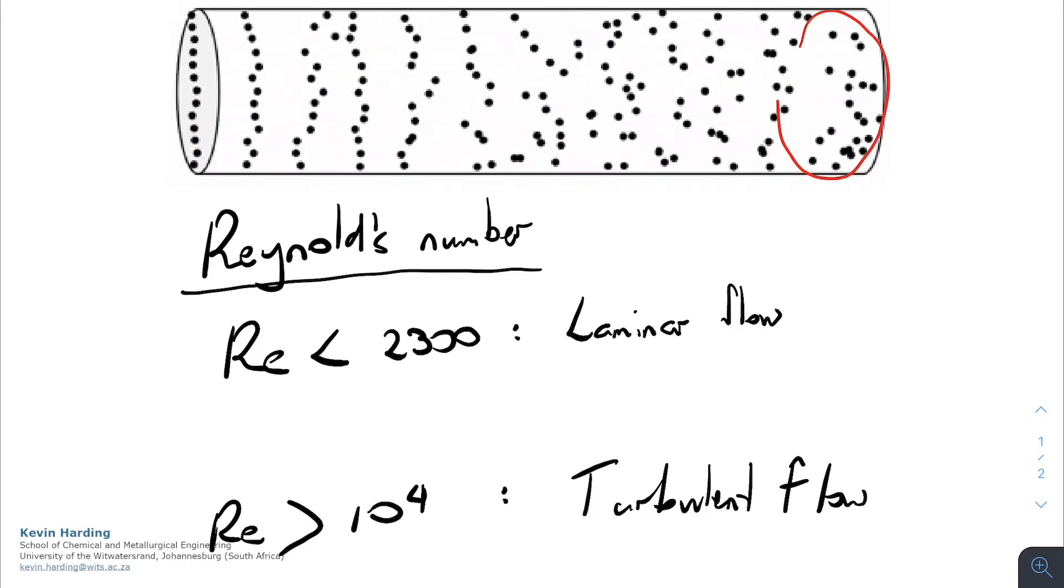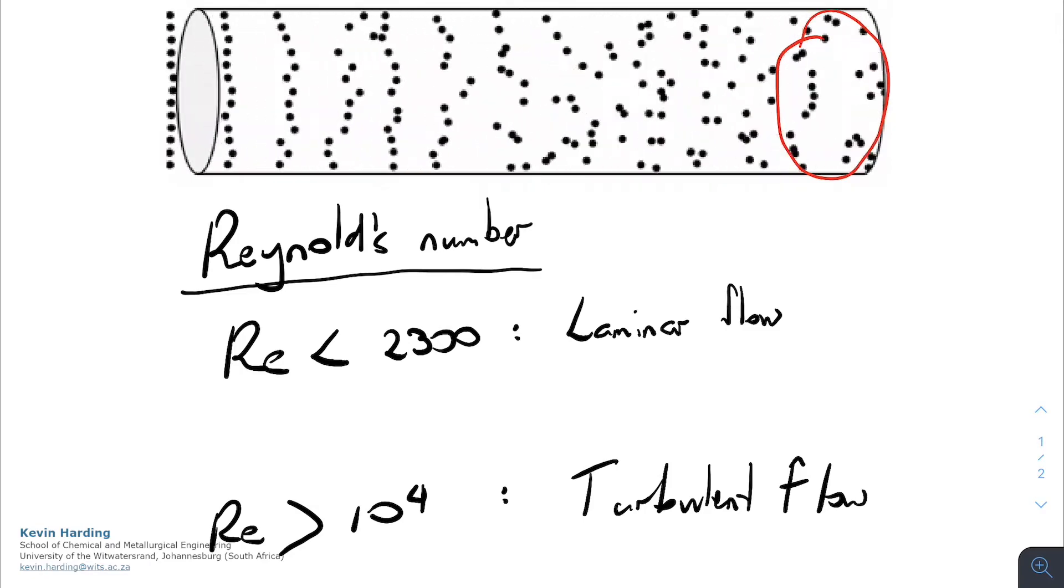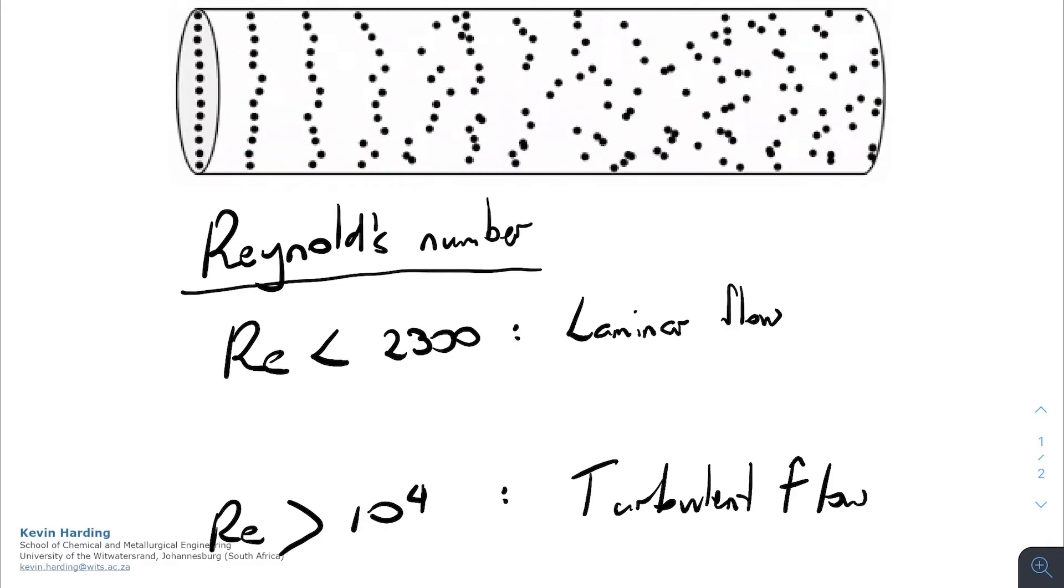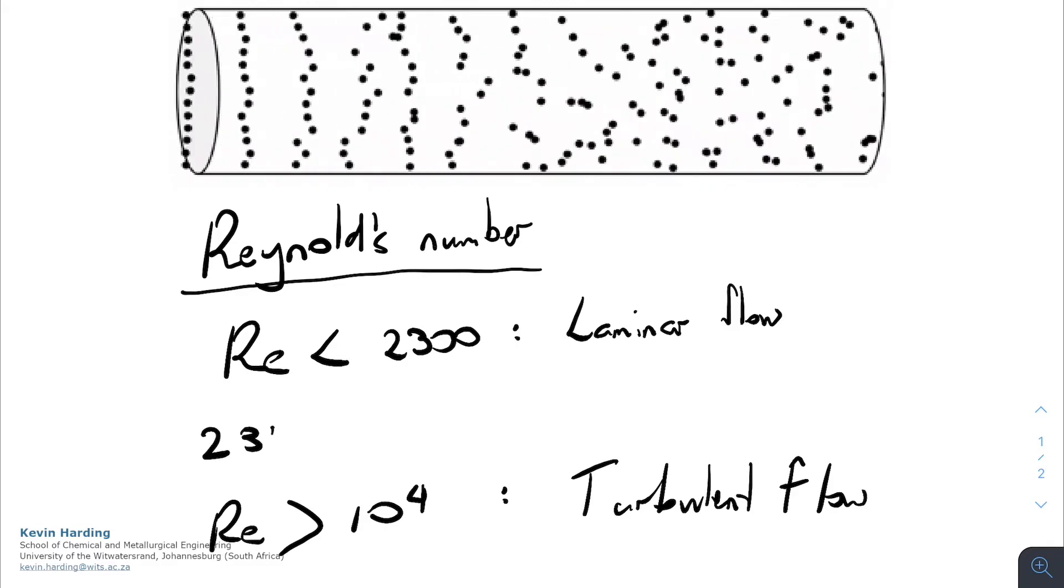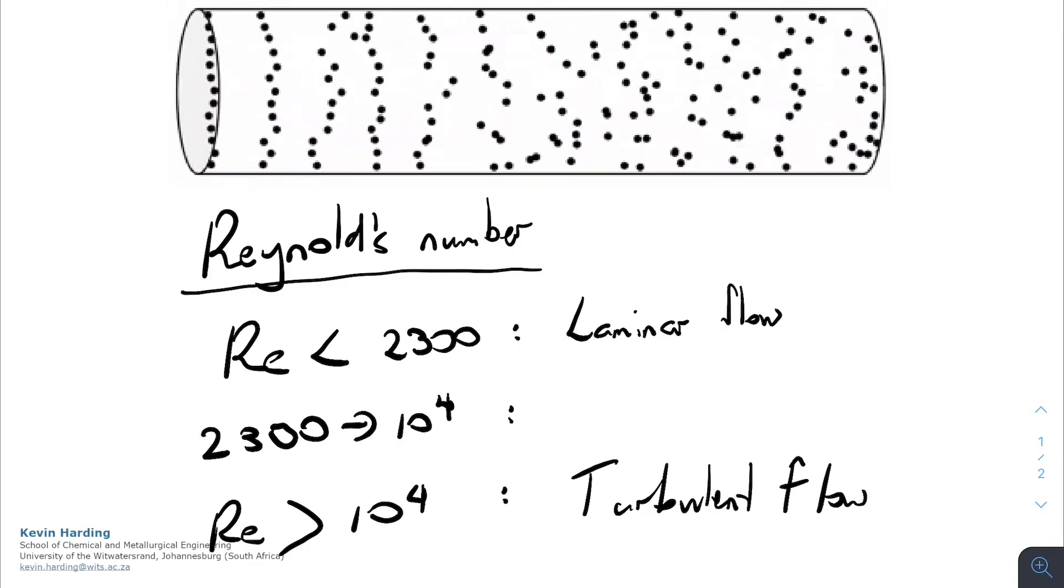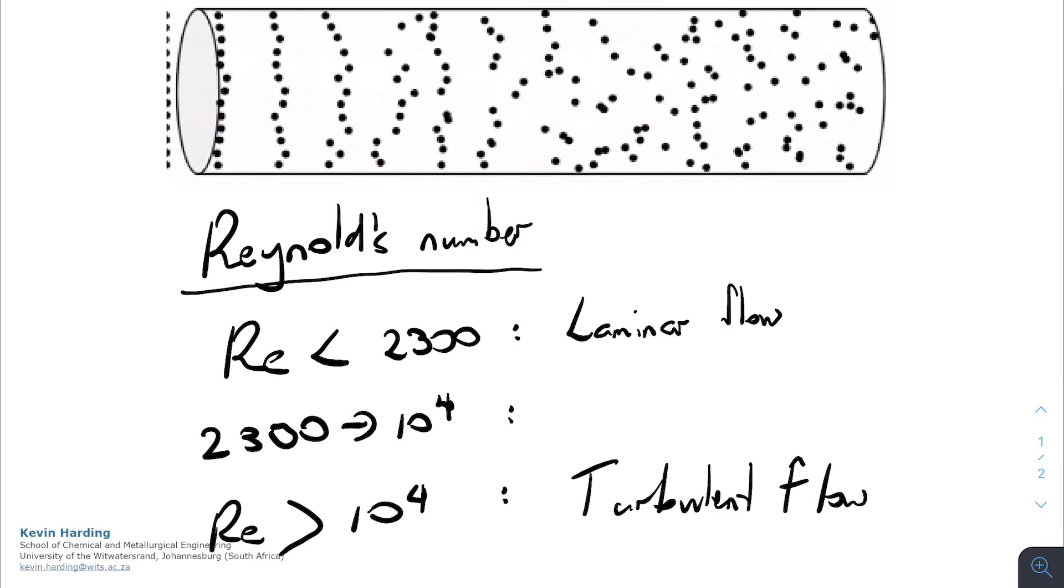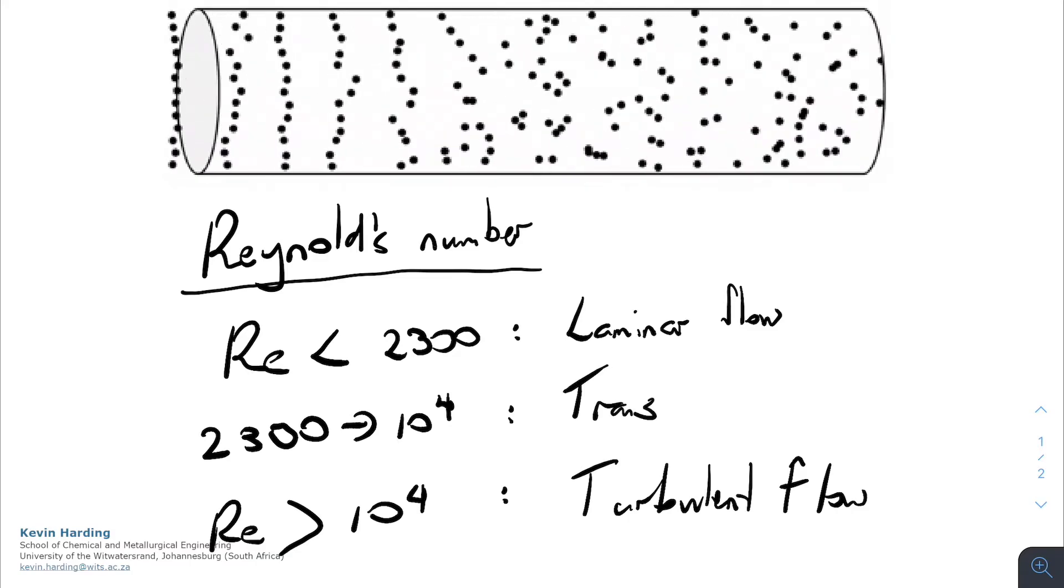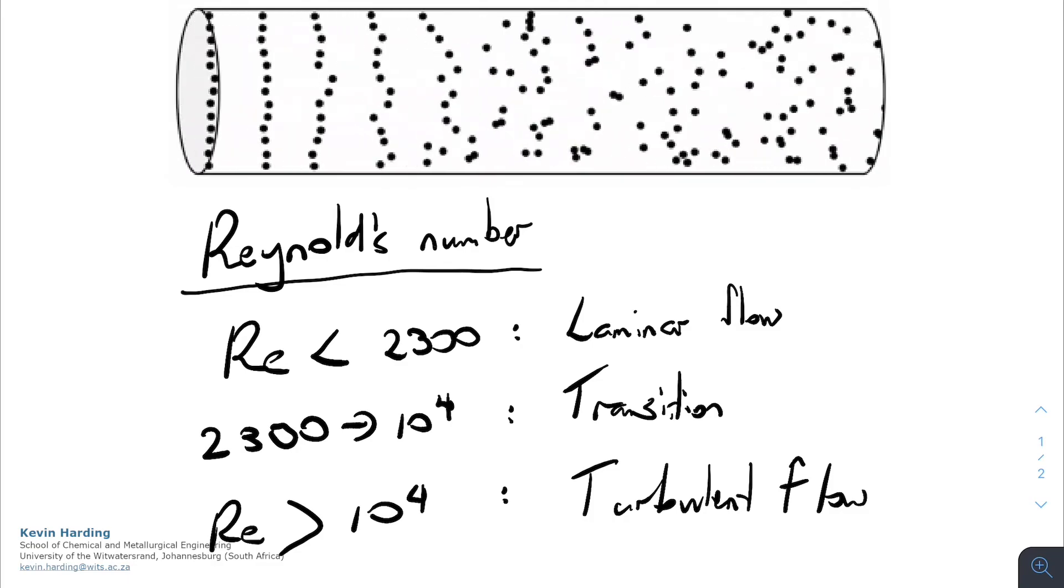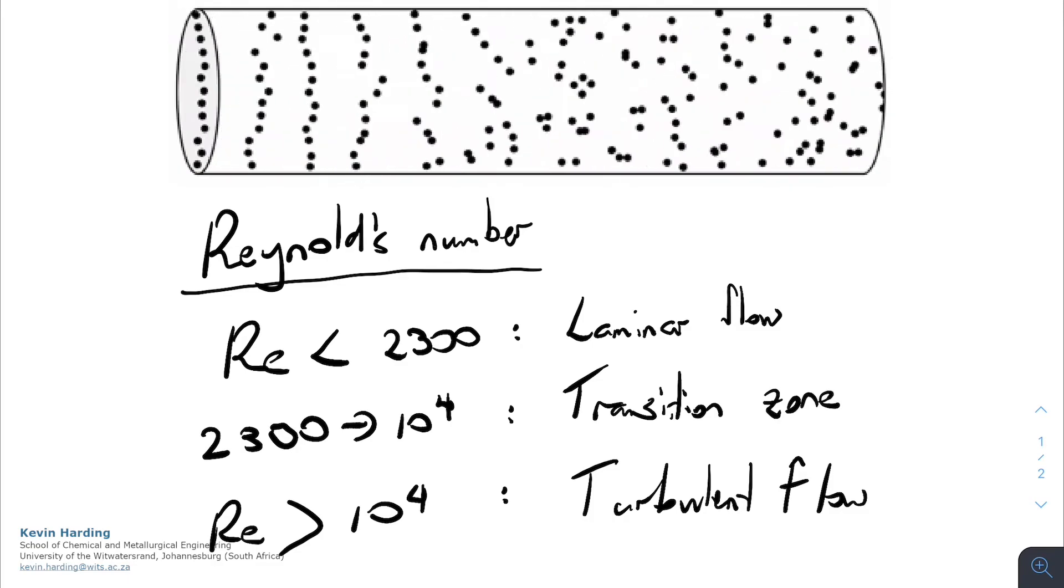So similar to the way we've got it in the right-hand side of this pipe in the top here. And if it's anything in between, so a Reynolds number that is between 2300 up to 10 to the 4, we are going to say it is in a transition zone. So that is not a laminar, and it's not a turbulent flow.